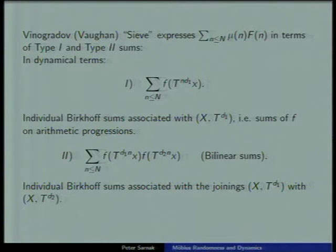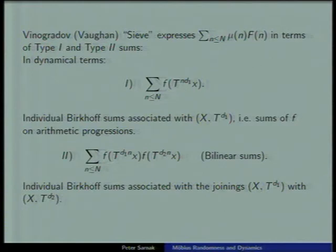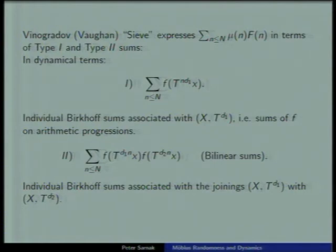If you assume the Chowla conjecture, you can write down exactly what the Möbius flow should be in the language of dynamics: the randomness in Möbius — the Möbius flow — is purely random except for a zero-entropy factor, the Kronecker factor, which is called the Pinsker factor. So it's a very interesting dynamical system. The deepest things we know about Möbius are that it's disjoint from reasonably complicated systems. Let me say a word about the proof of disjointness from the horocycle flow — the most complicated system we currently know.